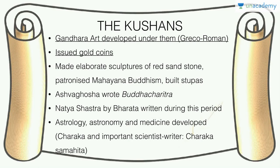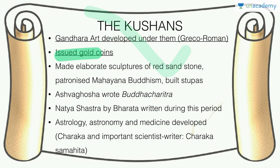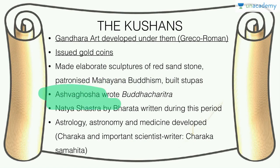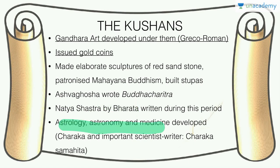Under the Kushans, Gandhara art developed — a Greco-Roman style, very important to know. They patronized Mahayana Buddhism. The court poet Ashvaghosha wrote Buddhacharita. Under their reign, the Natyashastra was written by Bharata, and astronomy, astrology, and medicine developed. Charaka wrote the Charaka Samhita — an important scientific text.